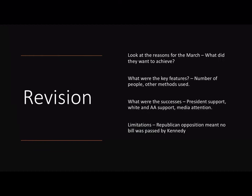For revision, we need to think about the reasons for the march and what they wanted to achieve. What were the key features — the number of people and the methods used? What were the successes? The President's support, white and African-American support and working together, and the media attention. And what were the limitations? The Republican opposition meant no bill was passed by President Kennedy.